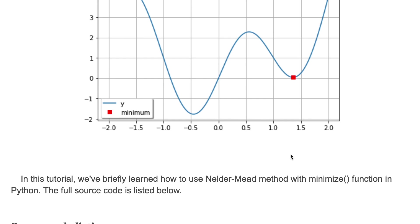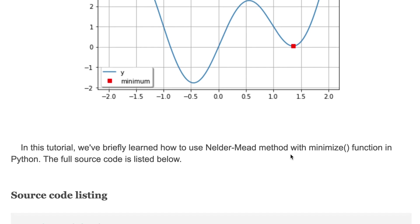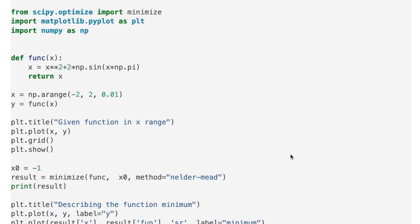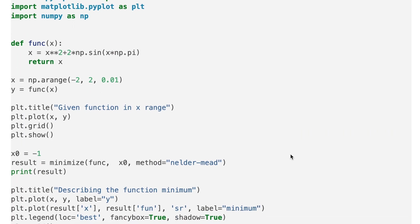That's it for this tutorial. In this tutorial we briefly learned how to use Nelder-Mead method with minimize function in Python. Here is the source code. I'll put the link to the source code in description.